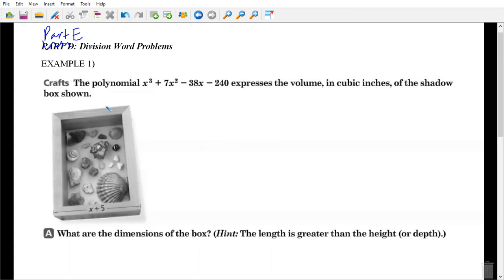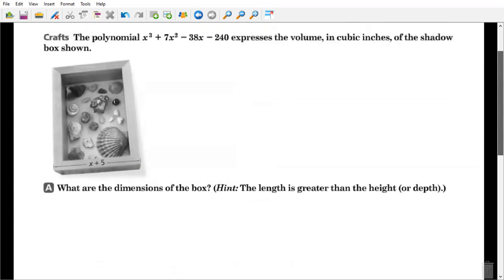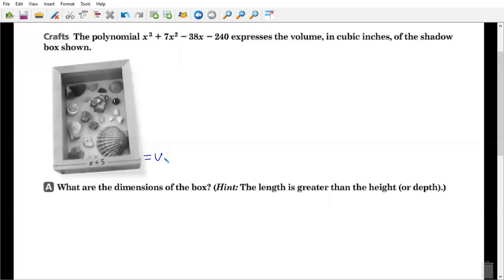Crafts. So we have here the polynomial x cubed plus 7x squared minus 38x minus 240 expresses the volume in cubic inches of the shadow box. Okay. If you look at the shadow box, the width is given. So it tells us the width. The width is x plus 5.